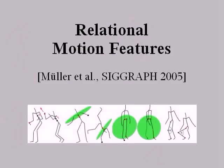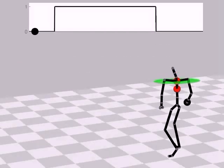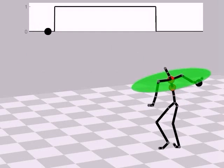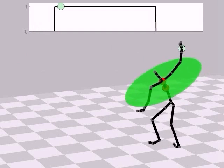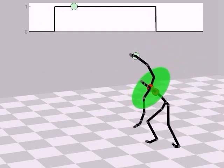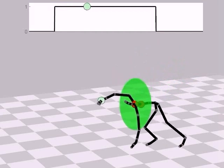To absorb the spatial deformations that typically distinguish logically related motions, we adopt the idea of relational features. In summary, a relational motion feature describes a boolean geometric relation between certain joints.